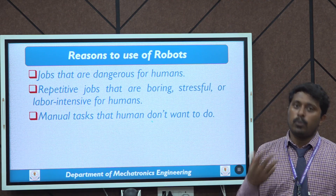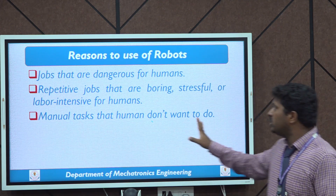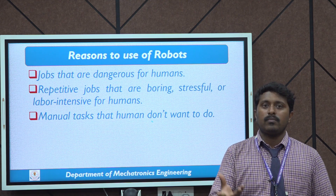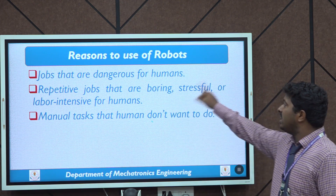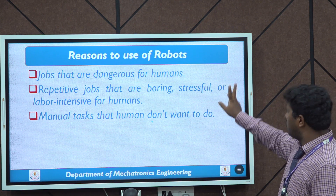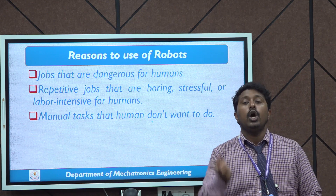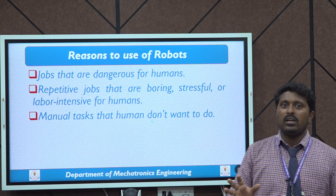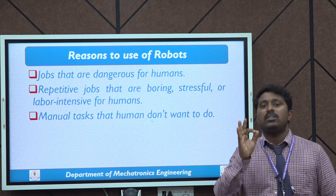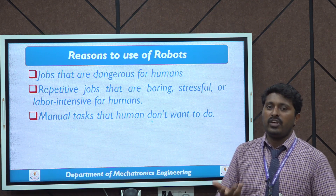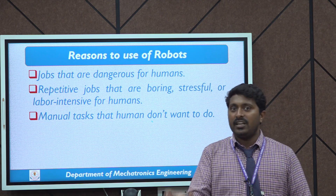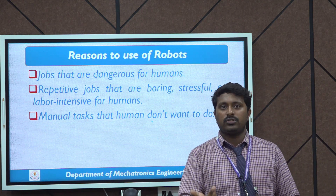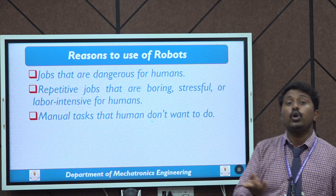What are the reasons behind using robots? There are three main reasons. First, jobs that are dangerous for humans — like handling nuclear waste or mining. Second, repetitive jobs that are boring, stressful, and labor-intensive, such as pick and place or material loading. Third, manual tasks that humans do not want to do, like safety tank cleaning or drainage cleaning — robots can handle these jobs.